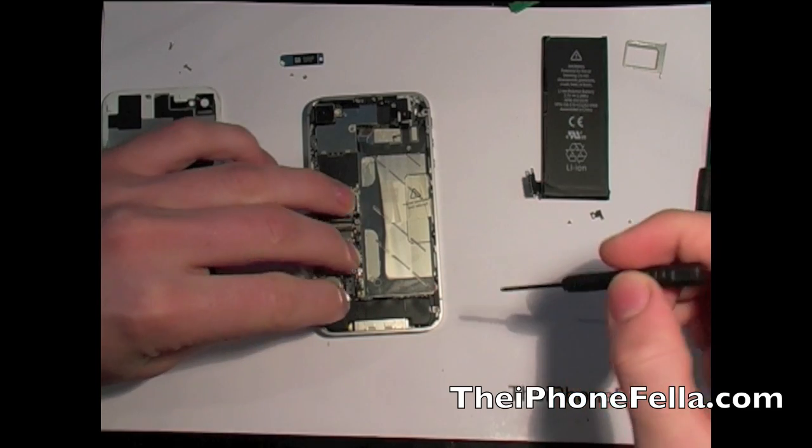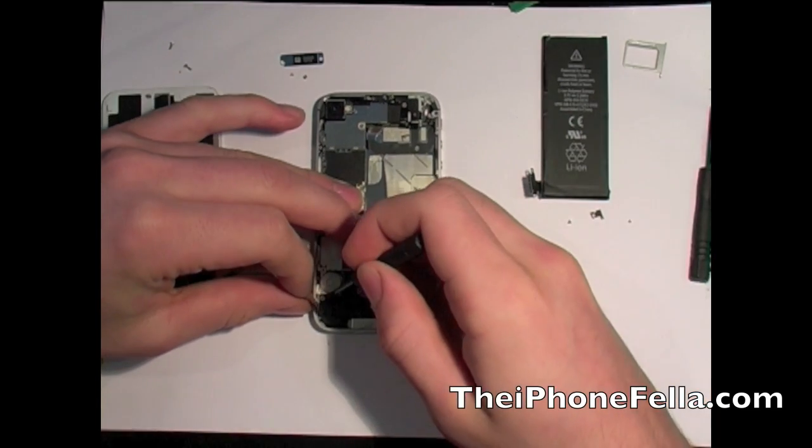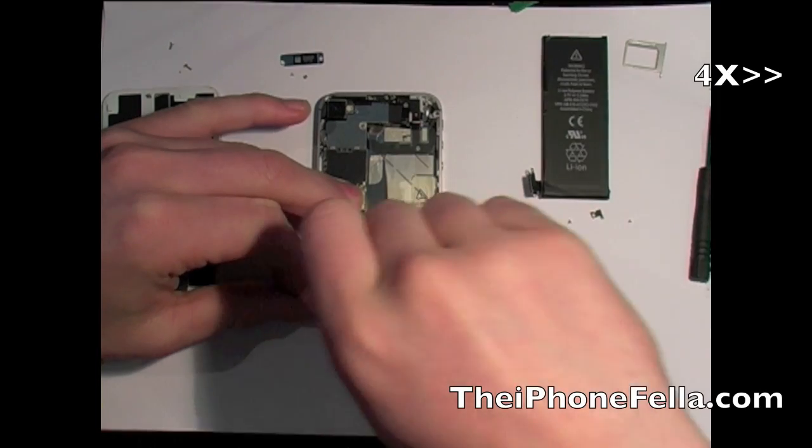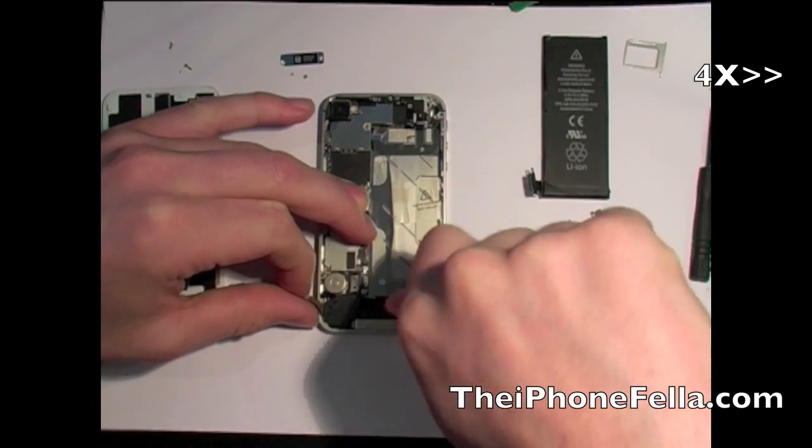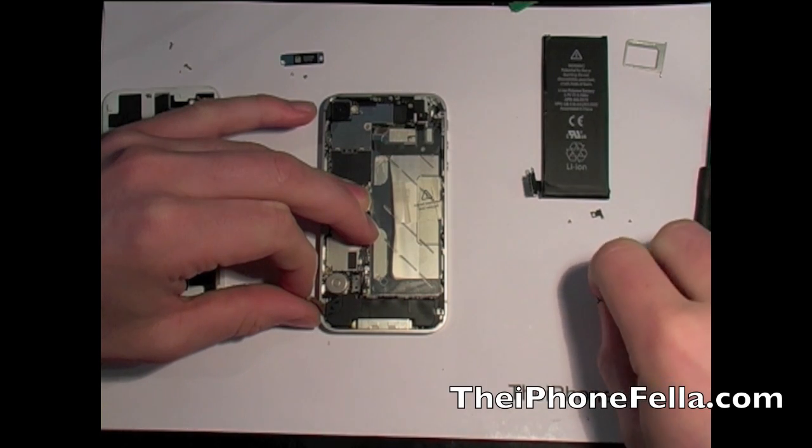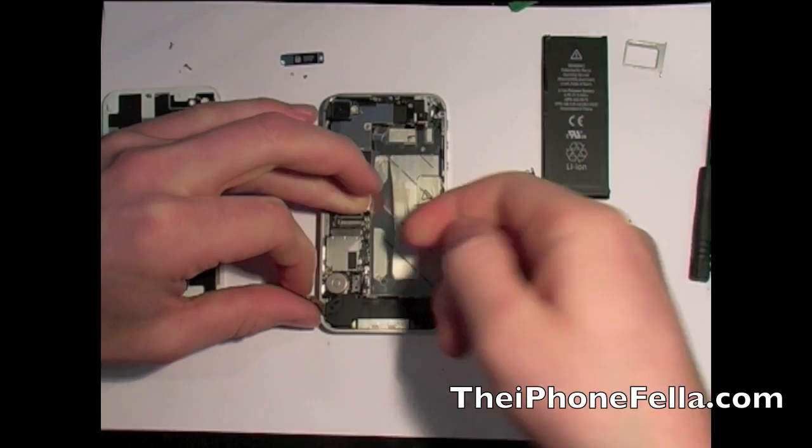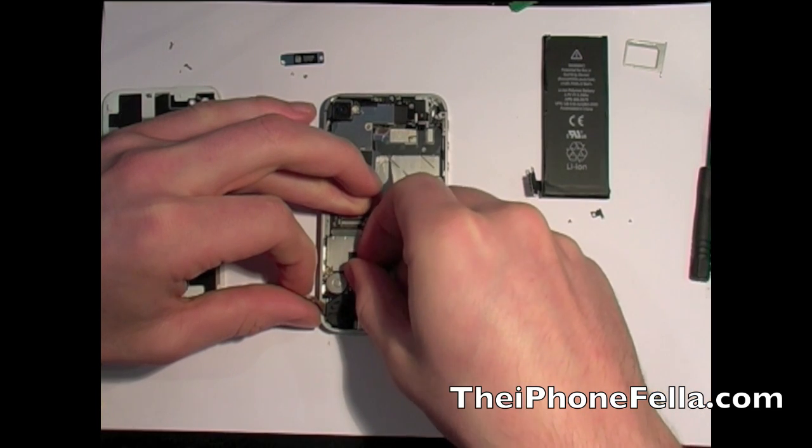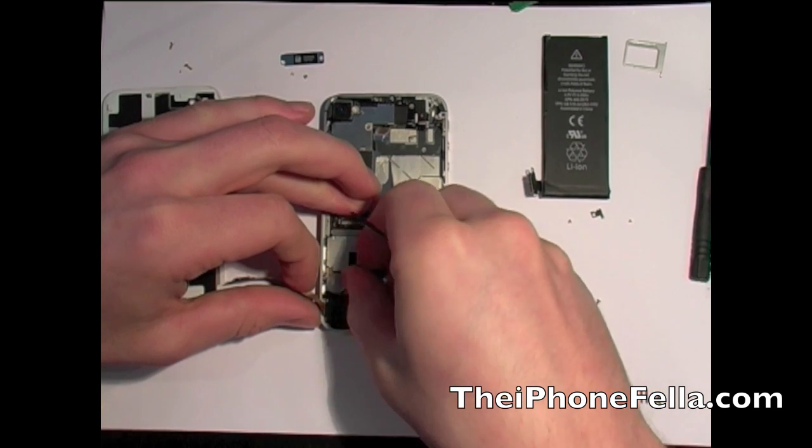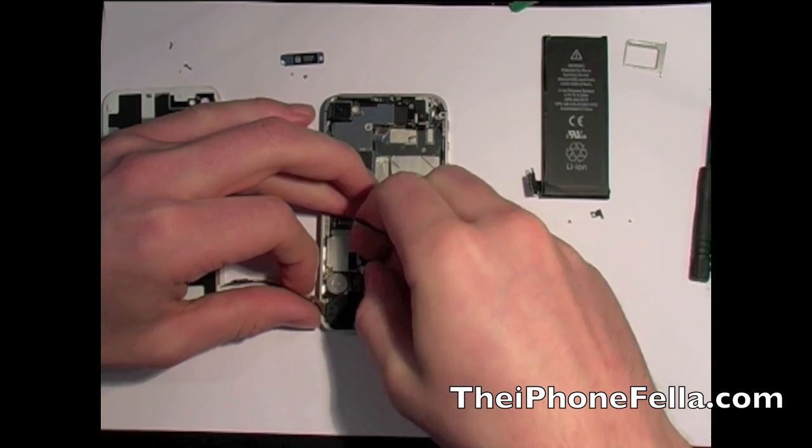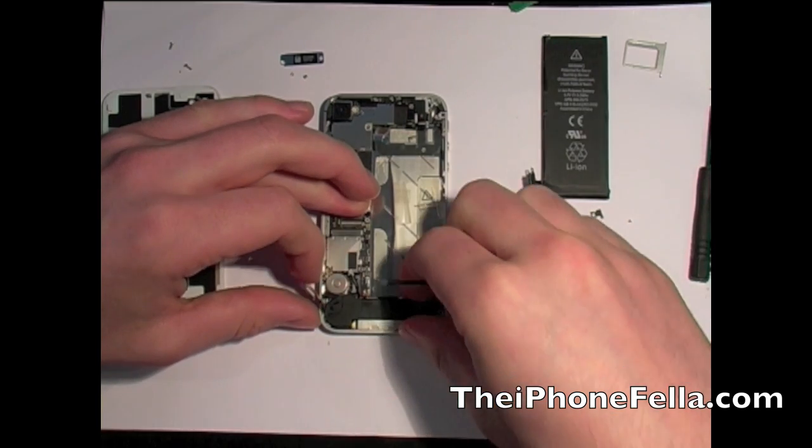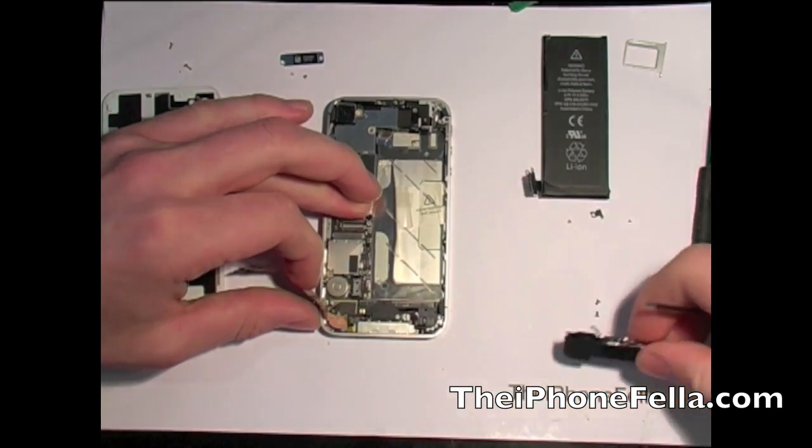Now to remove the microphone and speaker assembly. There are two screws either side. Simply remove these. There is still an antenna cable connected. I'm just going to use my nail and simply disconnect it. Once disconnected, the whole assembly should just come right out.